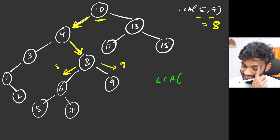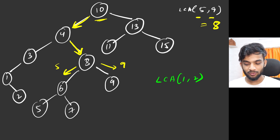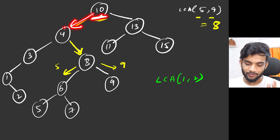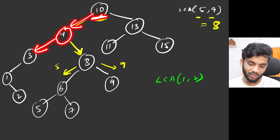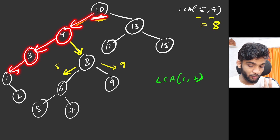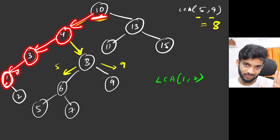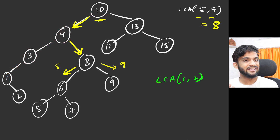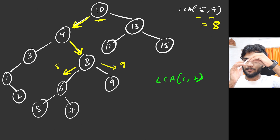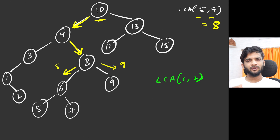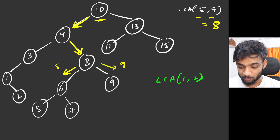What if I ask for the LCA of 1 and 2? Starting at 10: both lie on the left, move left. At 4: both on the left, move left. At 2: this is the moment you can't say both are on the left or right — since both 1 and 2 do not both lie in the same direction, this node itself is the LCA. It's simple: move left or right while both nodes go the same way; stop when they don't.